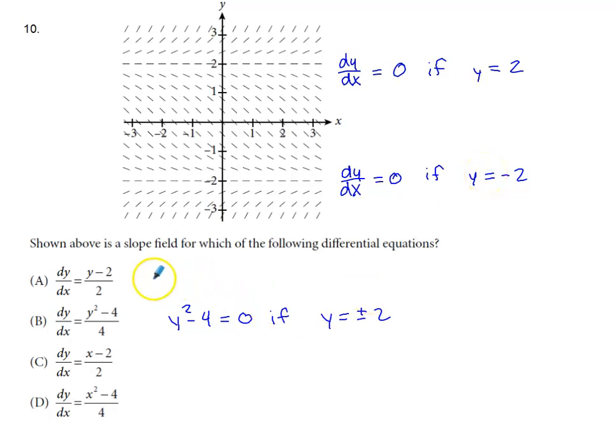So if you look at these options, this has one of the two things that we need to have happen happening with it. This is going to have a value of 0 when y is 2, but it's not going to have a value of 0 when y is negative 2.